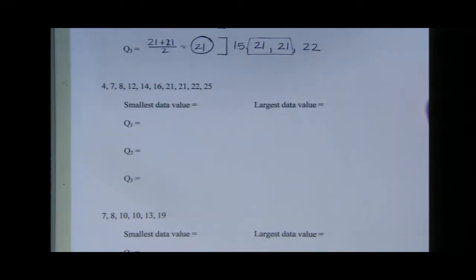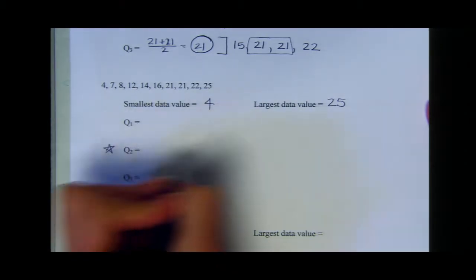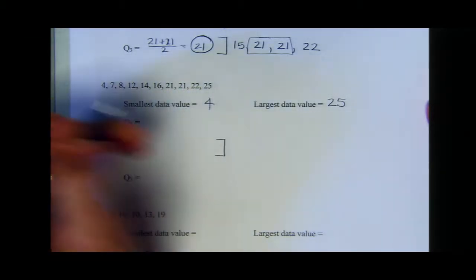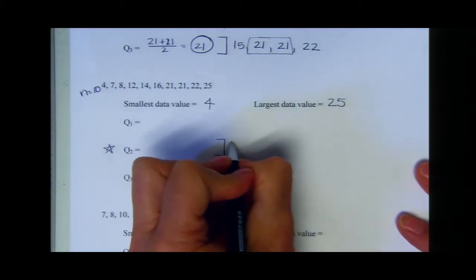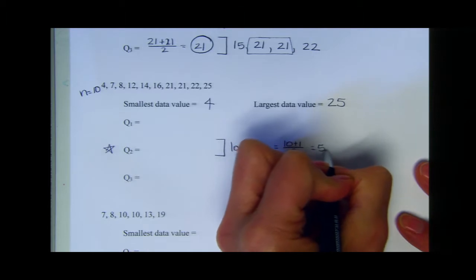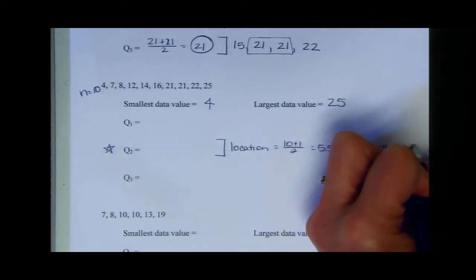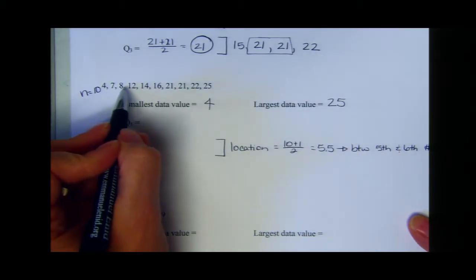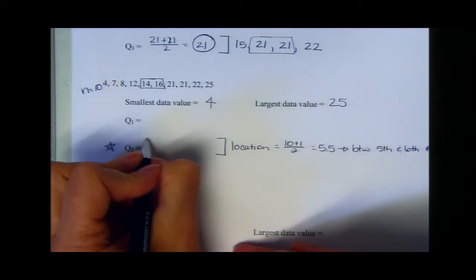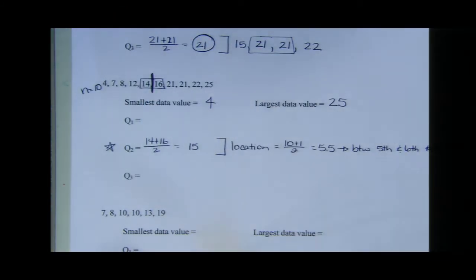Second example — numbers are already in order. Smallest value is four, largest is 25. Finding the median for quartile two: there are ten numbers, so the location is ten plus one divided by two, which is 5.5, meaning it's between the fifth and sixth numbers. Fourteen plus sixteen divided by two is fifteen. So quartile two is 15.